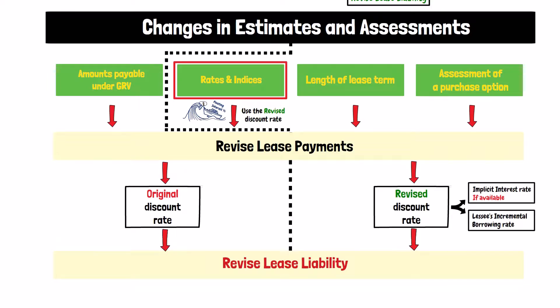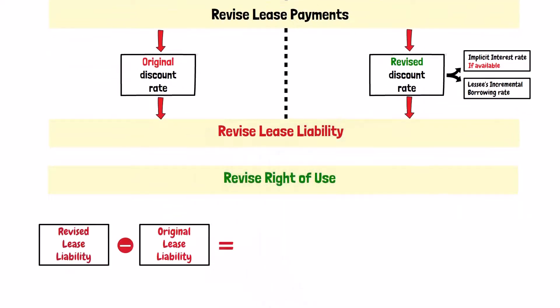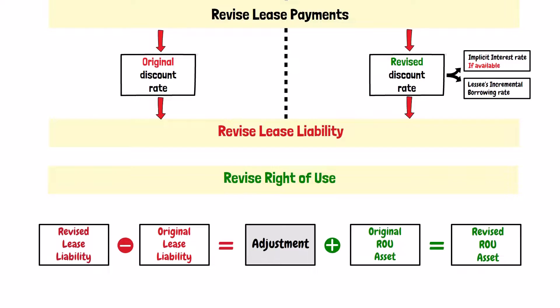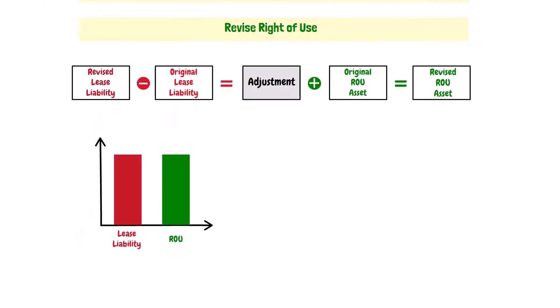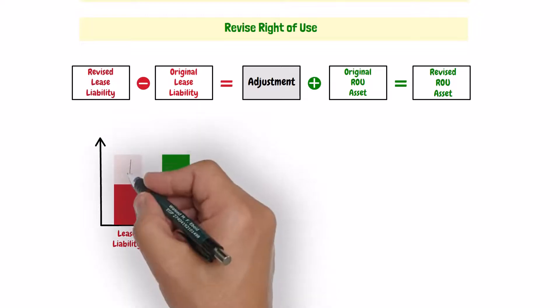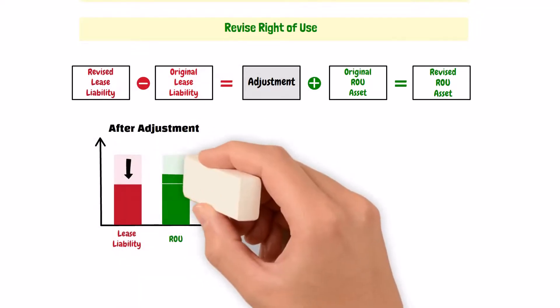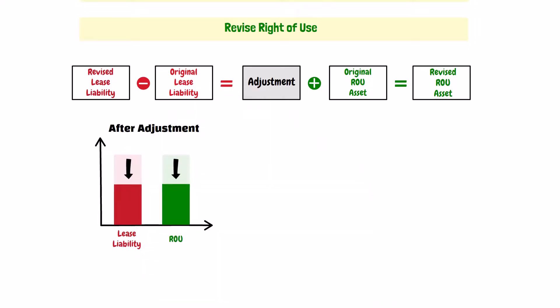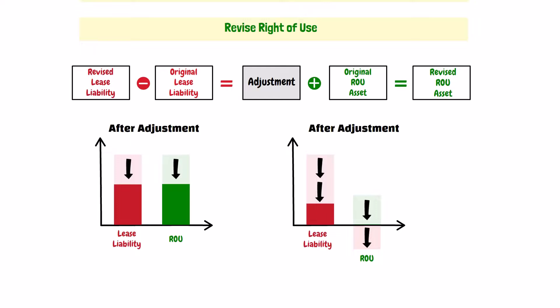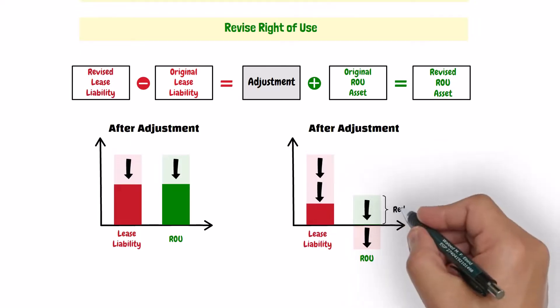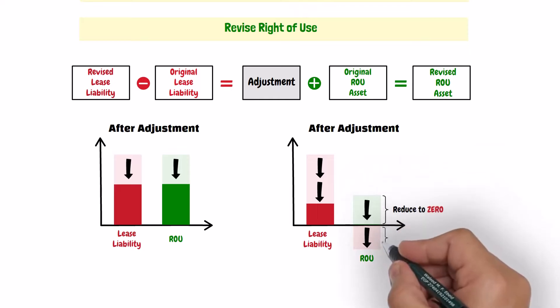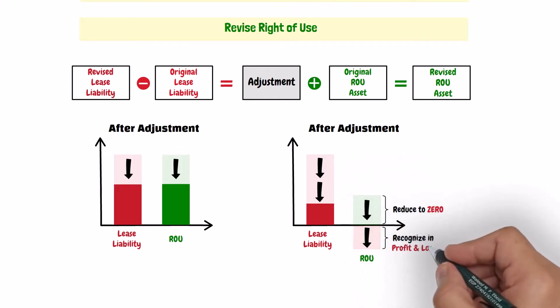After reassessing the lease liability, the right-of-use asset should be adjusted by the same adjustment done to the lease liability. In the event where the reassessment of the lease liability results in a reduction in its carrying amount, then the right-of-use asset should be reduced by the same reduction. If this reduction was greater than the carrying amount of the right-of-use asset, then the right-of-use asset should be reduced to zero balance, and any remaining reduction should be recognized in the profit or loss.